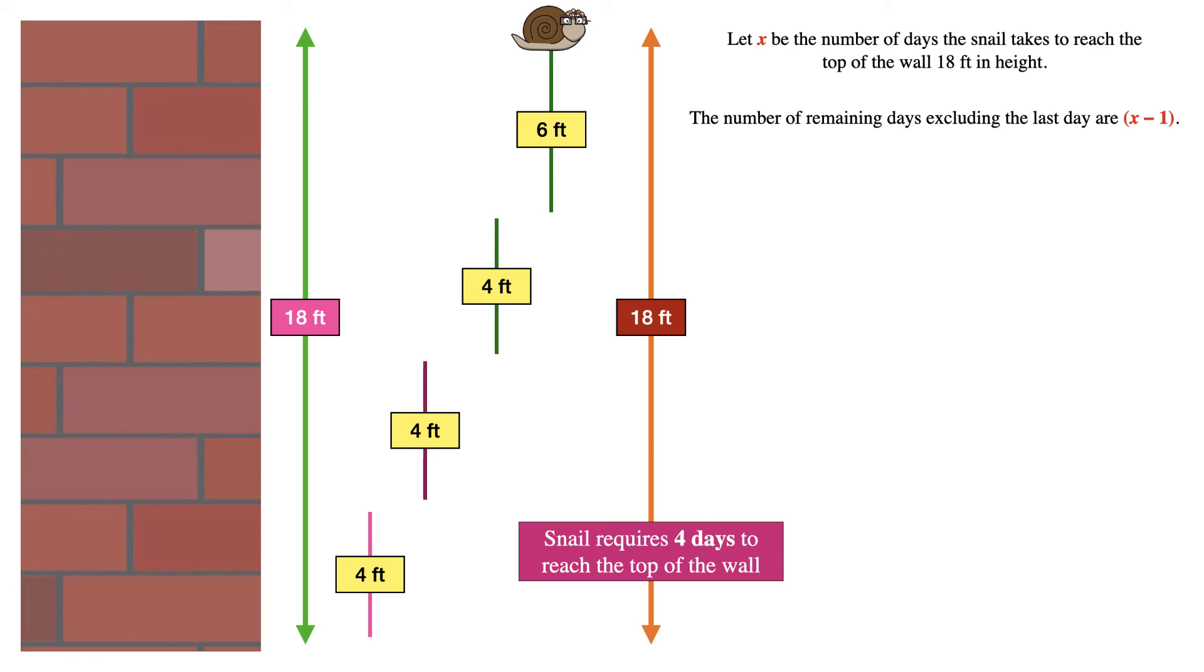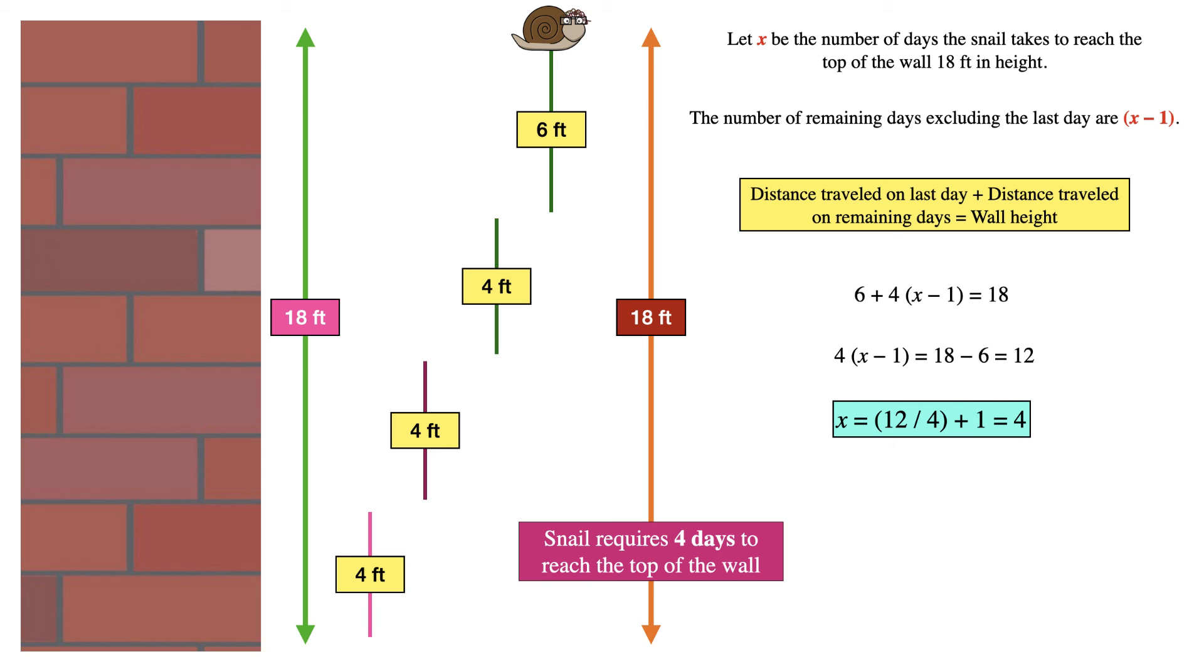Thus distance travelled on last day plus distance travelled on remaining days equals wall height, or 6 + 4(x - 1) = 18. On solving this equation we get 4(x - 1) = 18 - 6 which is equal to 12, or x = (12/4) + 1 which is equal to 4. So snail requires four days to reach the top of the wall.